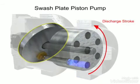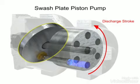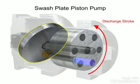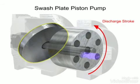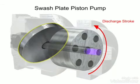On the discharge stroke, the angle of the swashplate forces the pistons back inside the piston block and discharges the fluid.